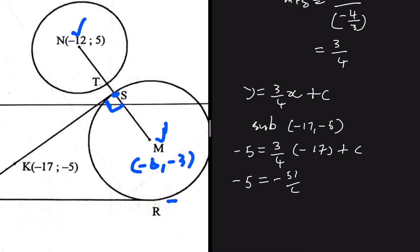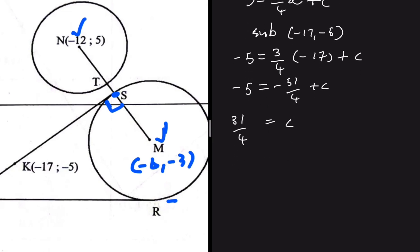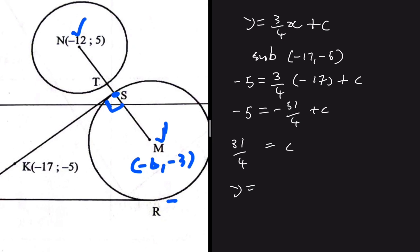So the equation of line PS is y = (3/4)x + 31/4. Substituting x = −17 confirms y = −5, so we are confident the equation of tangent PS is y = (3/4)x + 31/4.